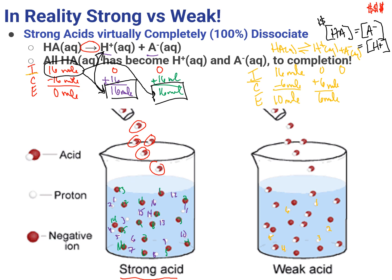I only lose 6 moles of HA, so I should still have 10 moles of HA left — whereas for the strong acid, I had absolutely no HA left. I've only partially dissociated. I've only lost 6 moles of HA that have become H+, and because it's a monoprotic acid it's a 1-to-1 ratio. I've only gained 6 moles of conjugate base. For a weak acid, we'll focus on this next vodcast, but what makes a strong acid strong is that all of the HAs become H+ and A-, whereas for the weak acid, that is not the case.